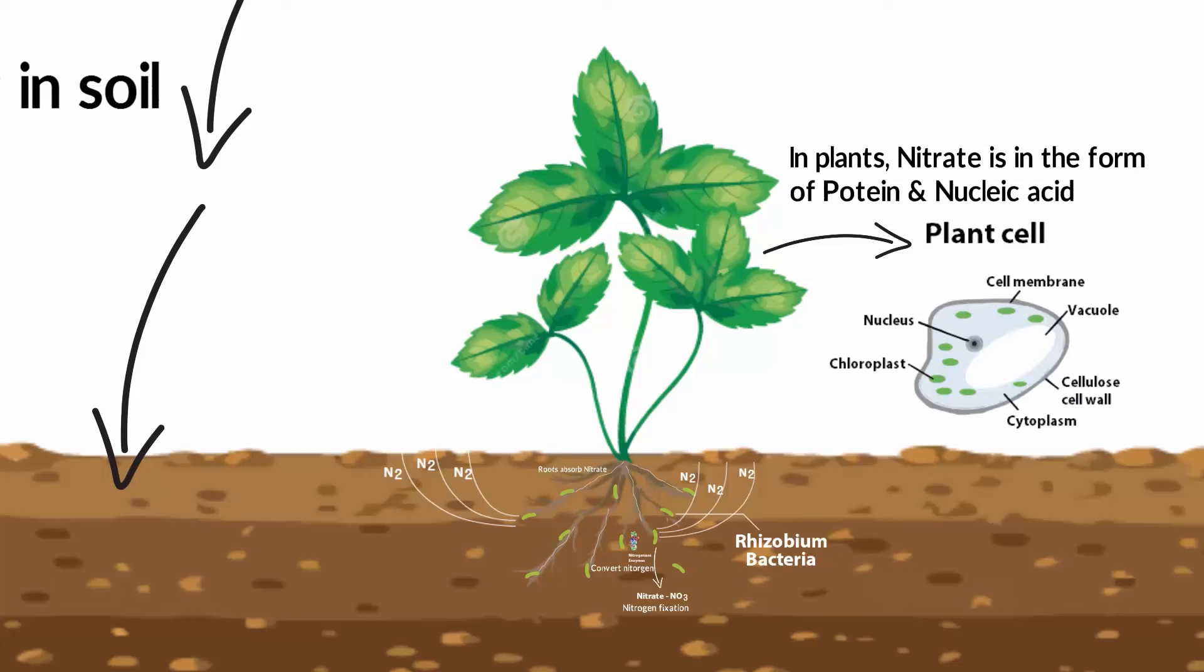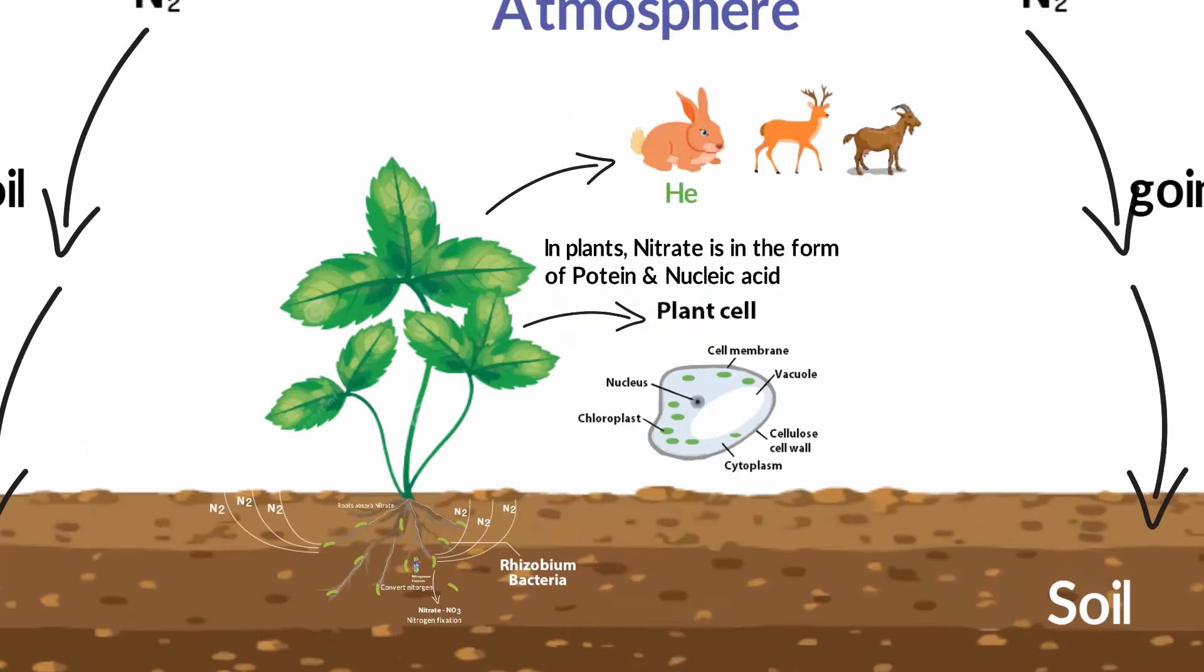If you can recollect the ecological pyramid, in that we have seen that plants are producers and herbivorous animals feed on plants for food and energy. That's how animals get the nitrogen they need by eating plants.